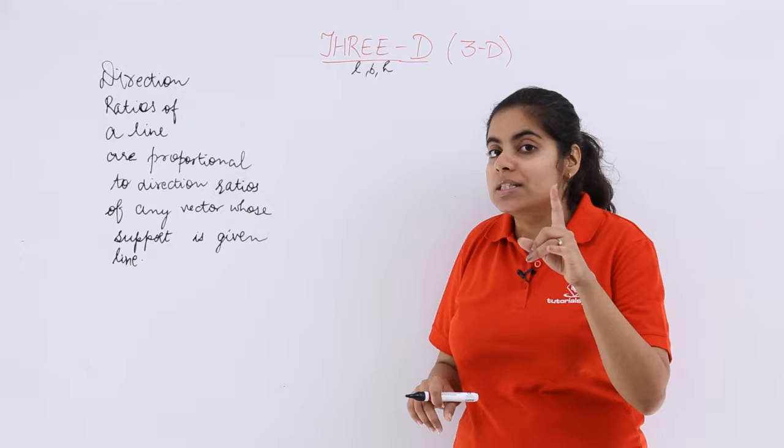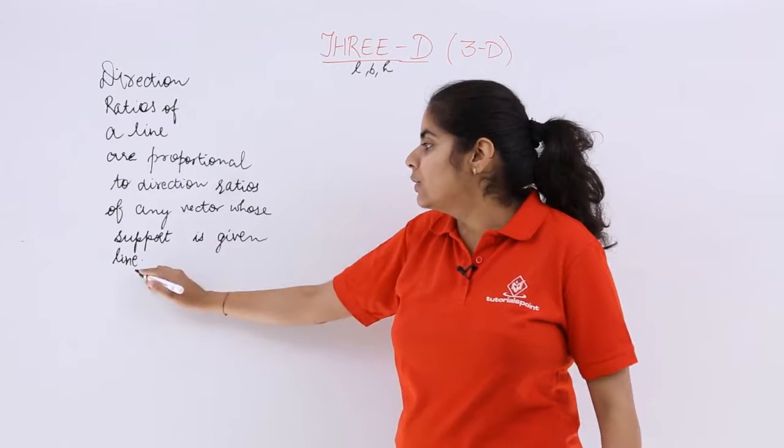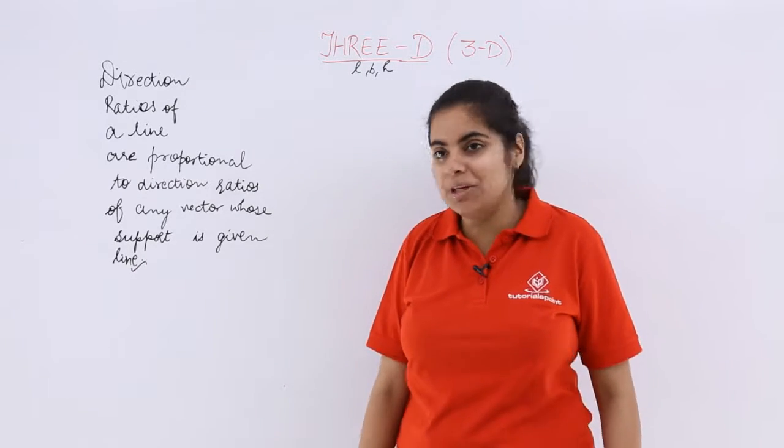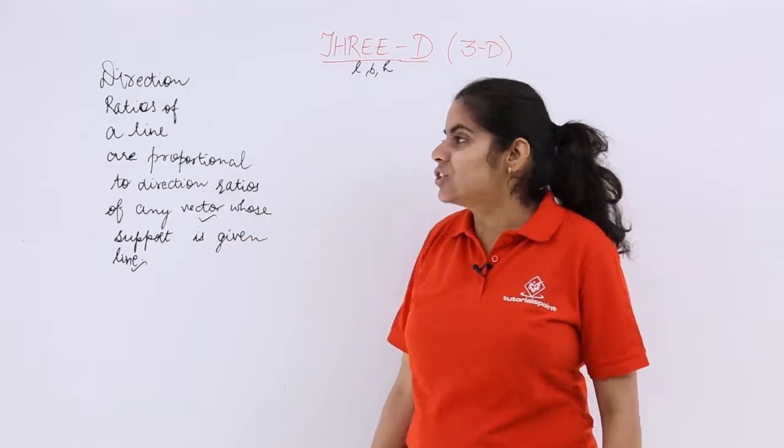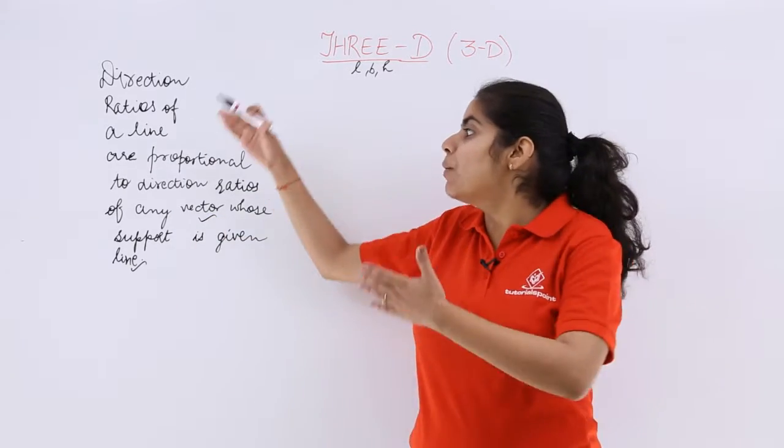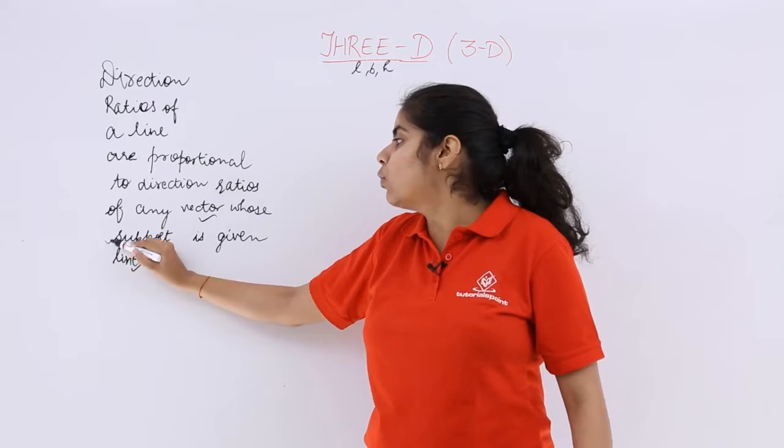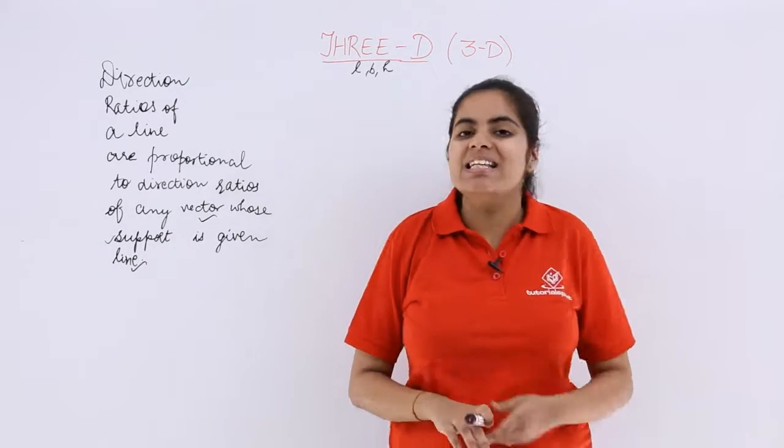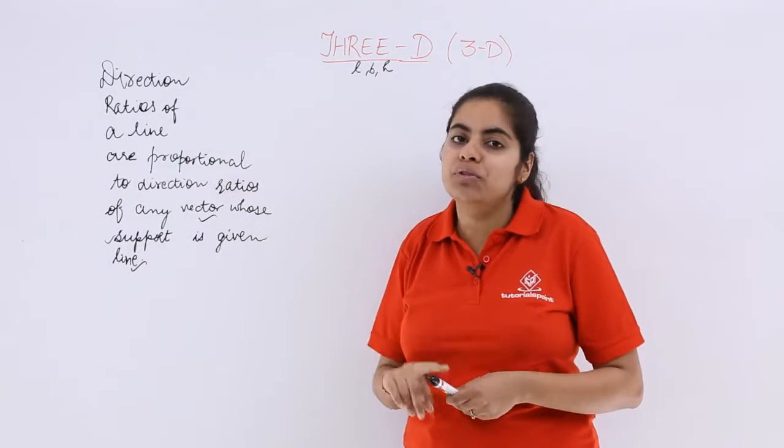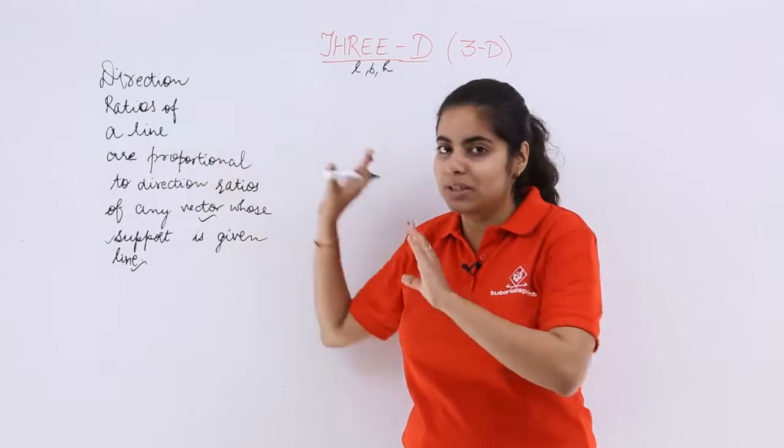Now just see, this definition only tells you that you need to know about the straight lines chapter, you need to know about the vectors chapter and you need to know about the previous chapters because the support word was also in your vector. So direction ratios of any line if you have to calculate, do not panic with the definition.